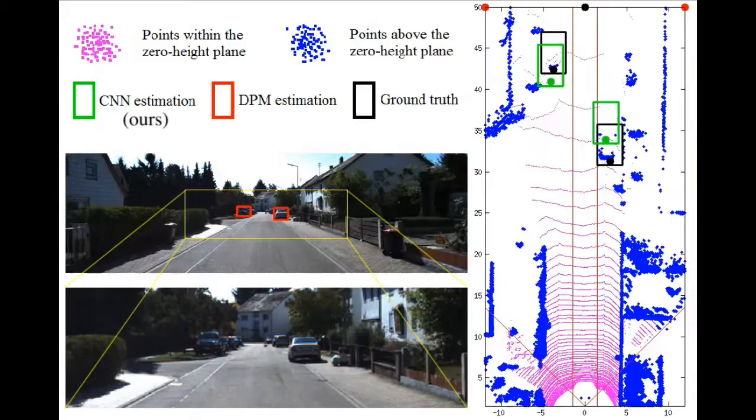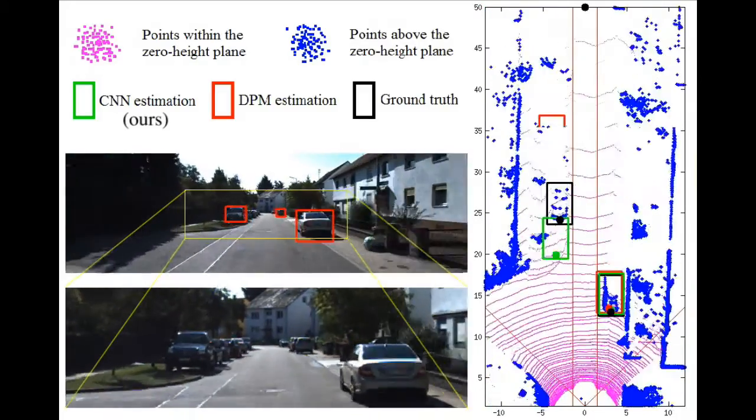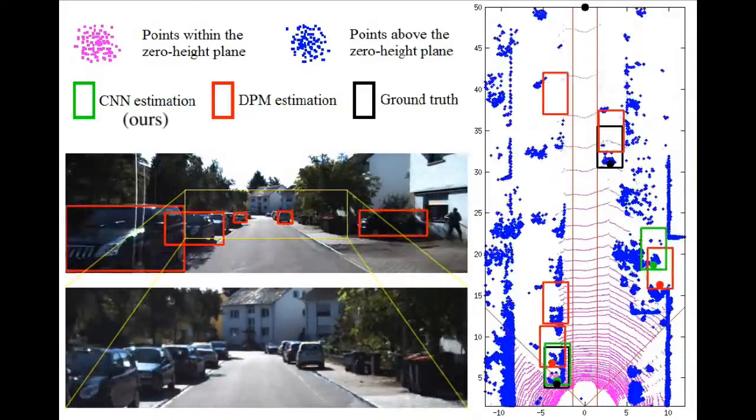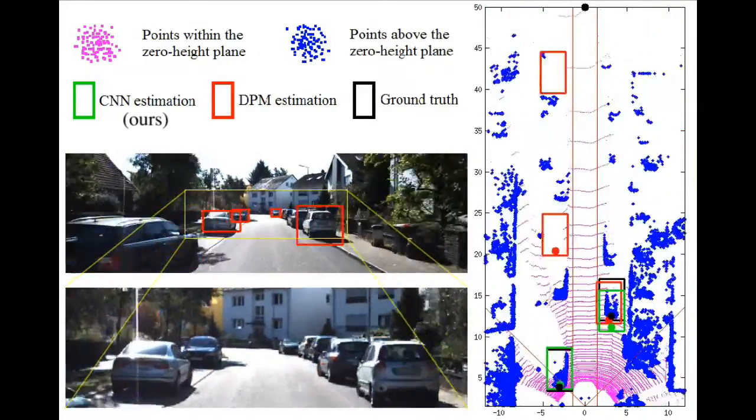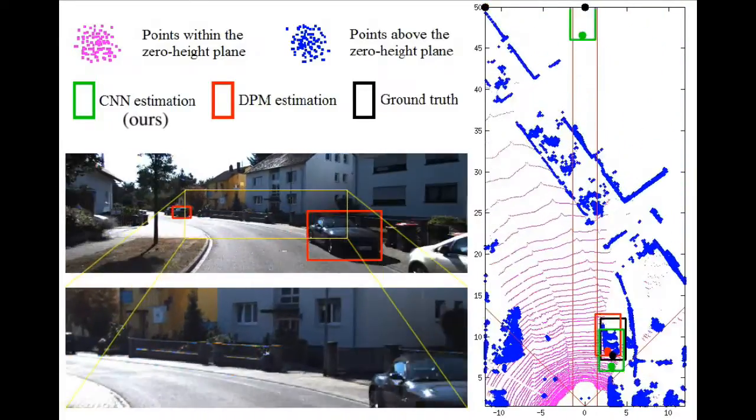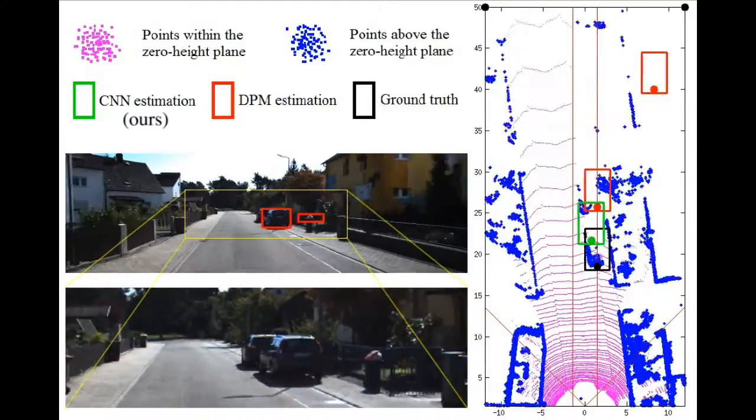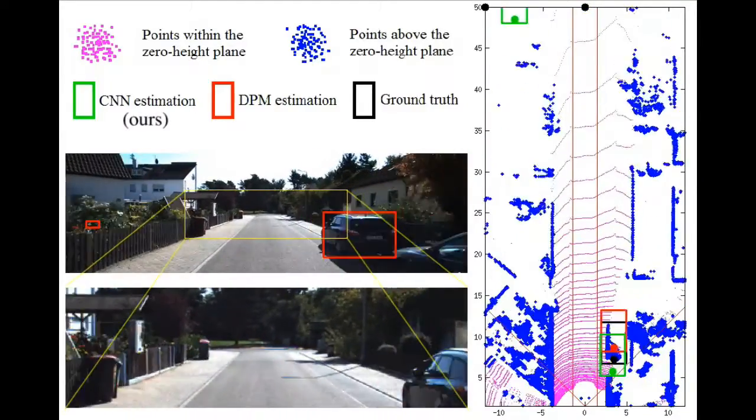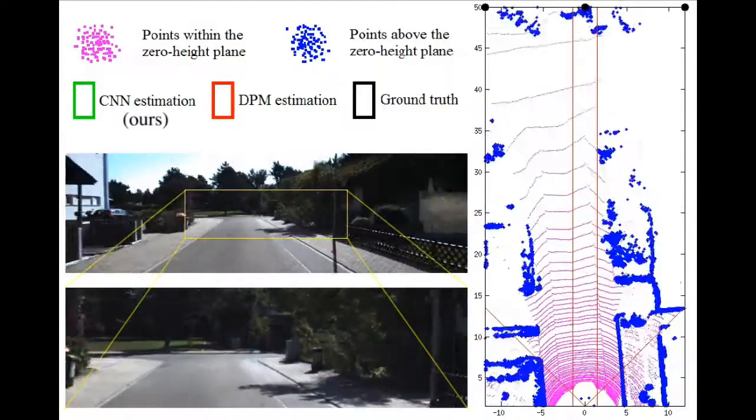For car distance estimation on the KITTI dataset, we show our KITTI based direct perception model running on some testing samples, and we also compare it with a DPM based baseline and the manually labeled ground truth. There can be many cars in a typical KITTI image, but only those closest to the host car are critical for driving decisions.